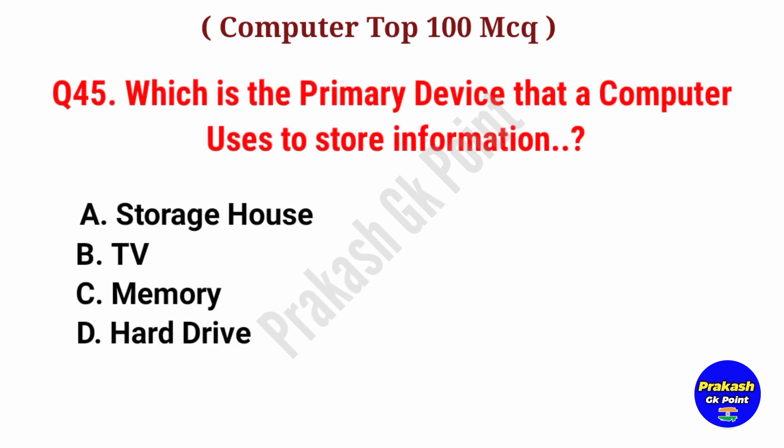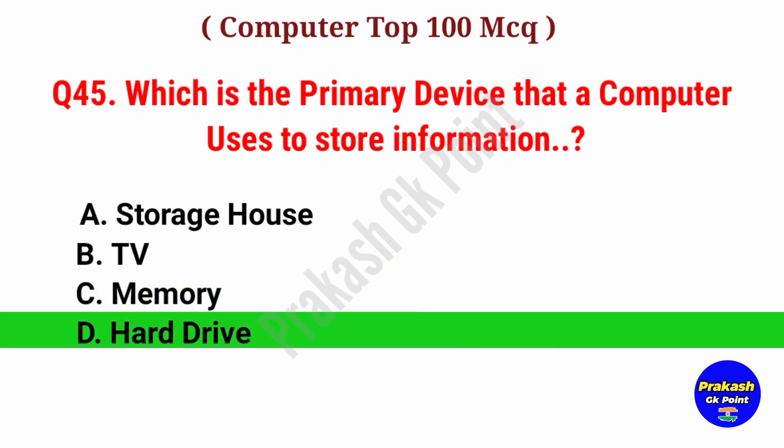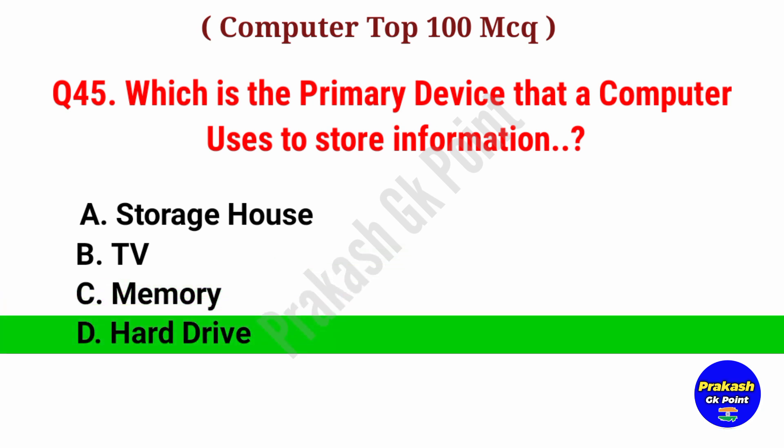Which is the primary device that a computer uses to store information? Answer: Option D, Hard Drive.